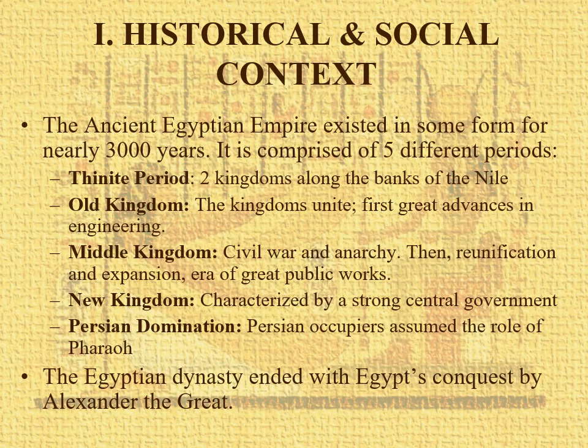Five different periods it is comprised of. First is the Thinite period, which was two smallish kingdoms along the banks of the Nile. They united in the Old Kingdom with the first great advances in engineering. Middle Kingdom — civil war, anarchy, then reunification and expansion; I believe this is the era of the pyramids of Giza. New Kingdom, the one you usually see in biblical epics, characterized by a strong central government. Then Persian domination, where the Persians assumed the role of Pharaoh. Egypt's dynasty technically ended with the conquest by Alexander the Great, continuing under Greek kingdoms and the Romans as the Ptolemaic Egyptian Empire. The last queen before direct Roman occupation was Cleopatra.